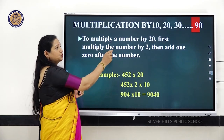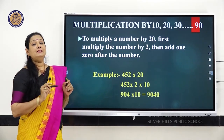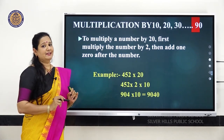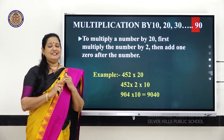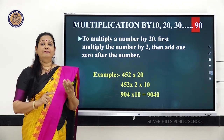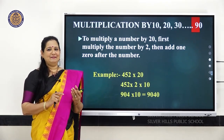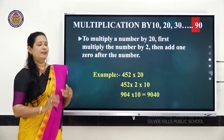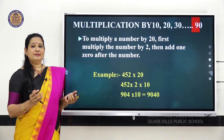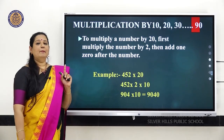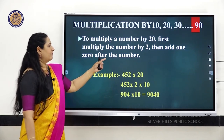Now, multiplication by multiples of 10 — 20, 30, 40, and so on. These numbers are multiples of 10. The multiples of 10 are 20, 30, 40, 50, 60, 70, 80, 90. To multiply a number by 20, first multiply the number by 2, then add one zero after the number.